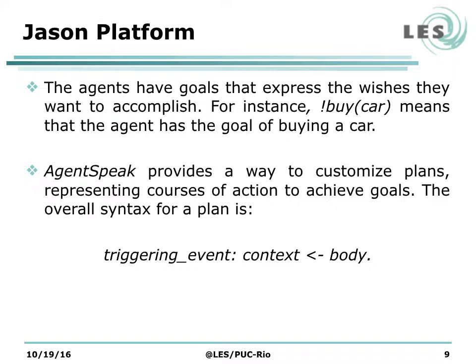AgentSpeak provides a way to customize plans, representing courses of action to achieve goals. The overall syntax for a plan is: triggering event, context, body. The triggering event is what triggers the plan to begin — for instance, the agent having the desire and intention to buy a car. The context evaluates if the plan is applicable; for instance, if the agent wants to buy a car, he needs to have a certain amount of dollars in his bank account. The body is the actions the agent will perform to accomplish the plan — in this case, going to the car store and paying the seller.